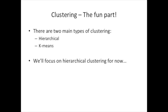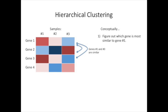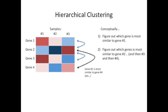Now that we understand scaling, let's move on to clustering. There are two main types of clustering, hierarchical and k-means. We'll focus on hierarchical clustering for now. Here's an example of how hierarchical clustering works. We're going to start with a simple example that has three samples and four genes. For this example, we are just going to use clustering to reorder the rows, or the genes. Conceptually, here's what we do. First, we figure out which gene is most similar to gene 1.